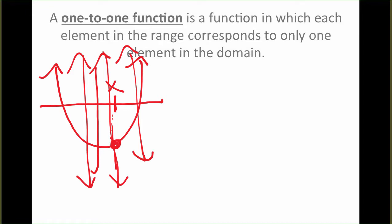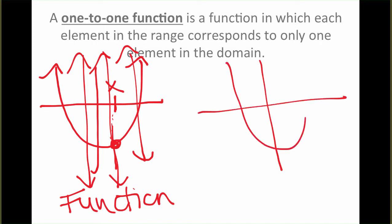Now, for something to be one-to-one, we're adding an extra restriction. It still has to pass the vertical line test, but now each element in the range, a y value, can correspond to only one element in the domain. That means we can only have each y value happen once. Here, as we go across and draw a horizontal line, we hit the graph twice, so this would be an example of a function that is not one-to-one.